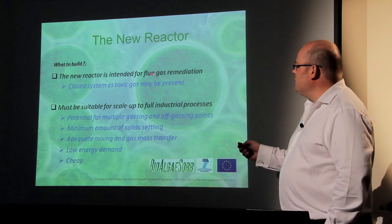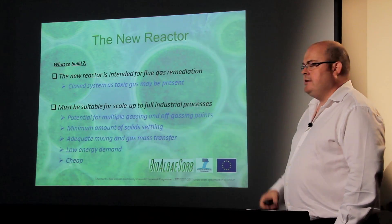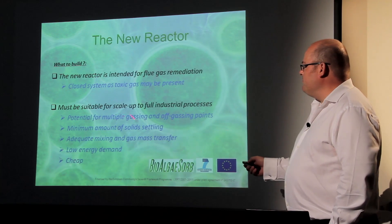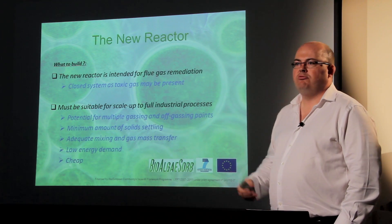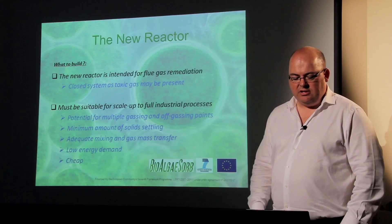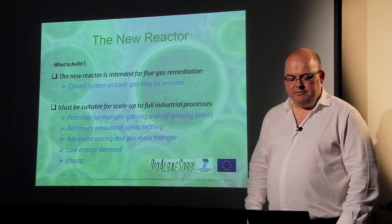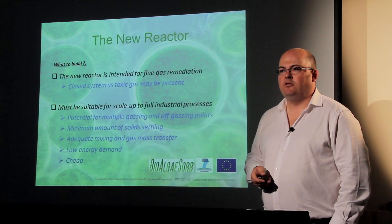Whenever we build a new reactor, it's good to understand the constraints of the system. In this particular system, one main constraint was that the new reactor was intended for flue gas remediation, and as such we needed to implement a closed reactor setup because of the potential for toxic gases. Other constraints included suitability for scale-up to a full industrial process, multiple gassing and off-gassing facility, minimum solid settling, adequate mixing for nutrients and gas, low energy demands, and low cost — where possible using off-the-shelf items from standard suppliers.